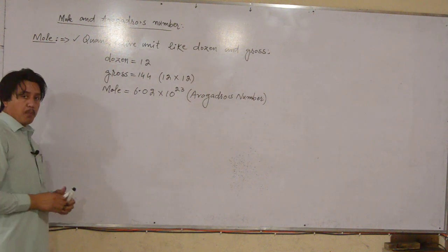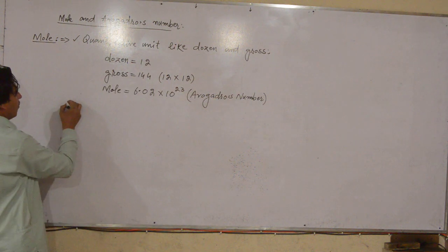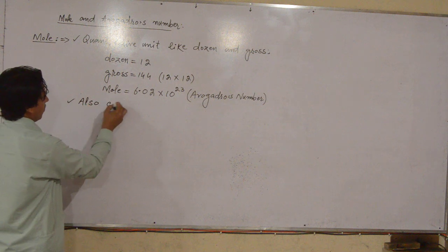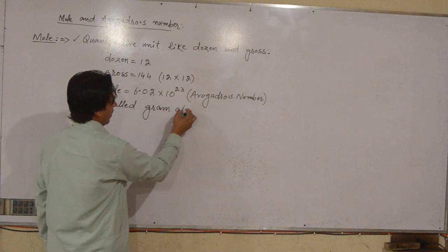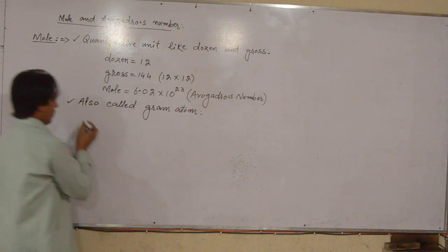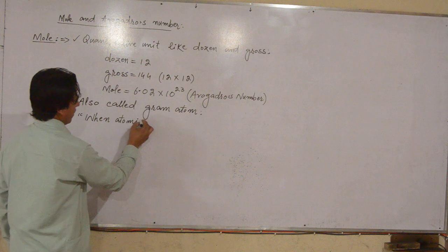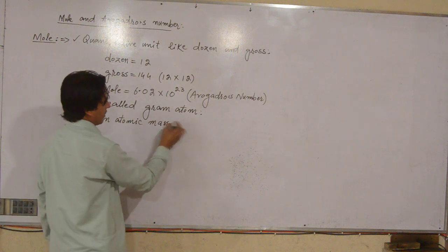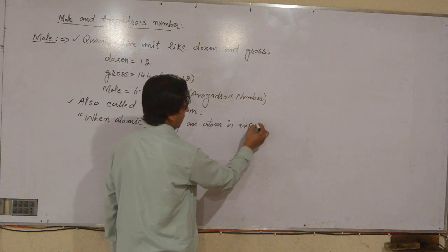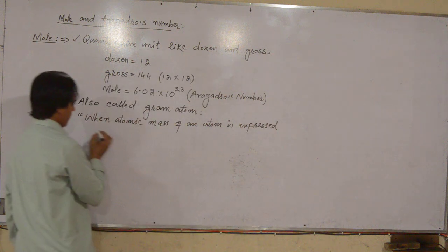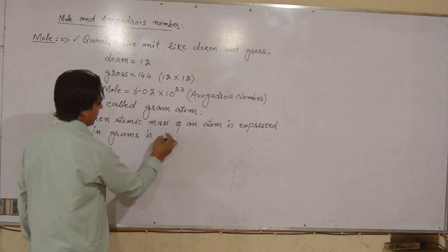Apart from this, there are two more things related to the mole. First, the mole is also called gram atom. The definition of gram atom: when the atomic mass of an atom is expressed in grams,